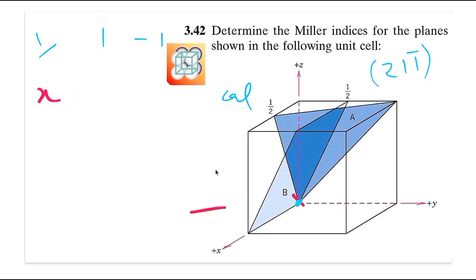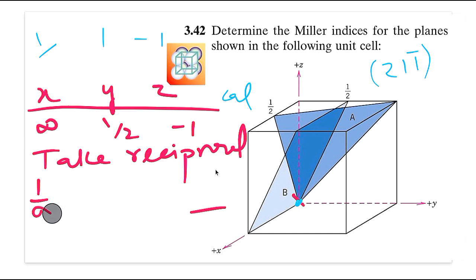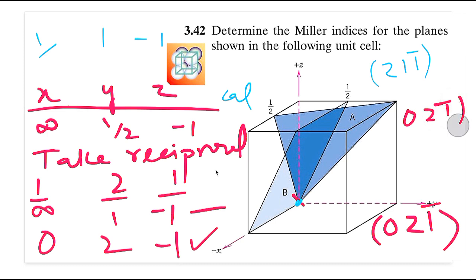So the intercepts for plane B are: x = infinity, y = 1/2, z = −1. Taking reciprocals: 1/∞ = 0, 1/(1/2) = 2, and 1/(−1) = −1. There are no fractions, so these are the final Miller indices. Writing them in circular brackets: x index is 0, y index is 2, z index is −1 (1-bar). The Miller indices of plane B are (0 2 1̄). That's how we calculate Miller indices for planes A and B. See you in later videos!